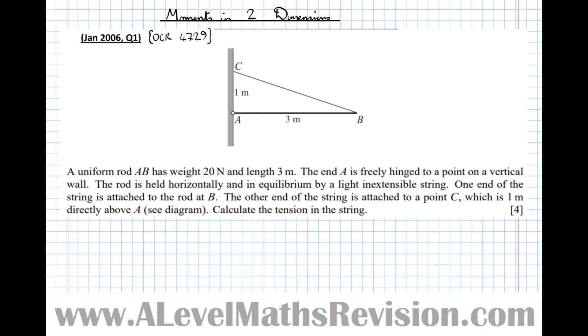The end A is freely hinged to a point on a vertical wall, and we can see the hinge there. The rod is held horizontally and in equilibrium by a light, inextensible string, which is this here.